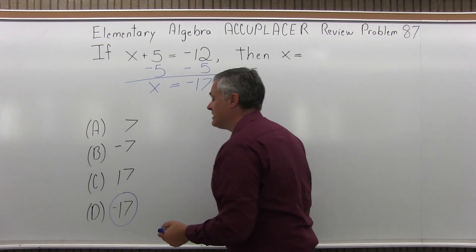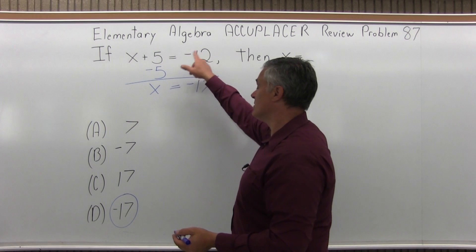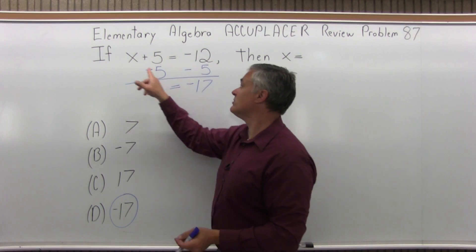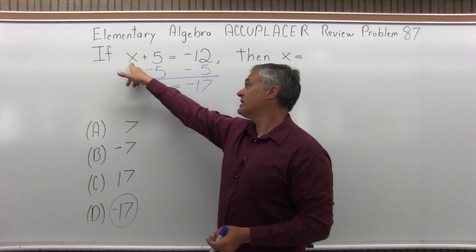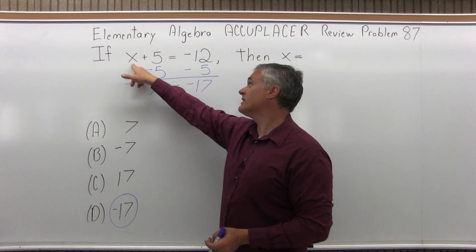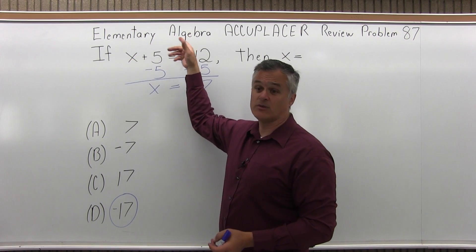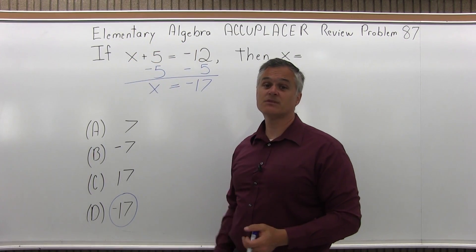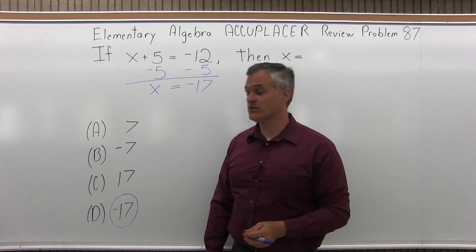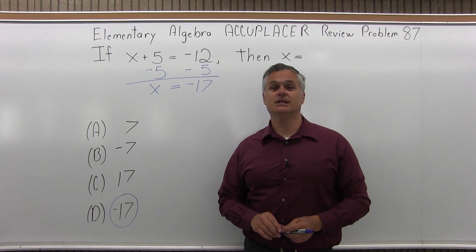That means negative 17 would make the equation true. So if you put in negative 17 for x, negative 17 plus 5, you'd have negative 12 equals negative 12. It does make the equation true. So the answer is option D.